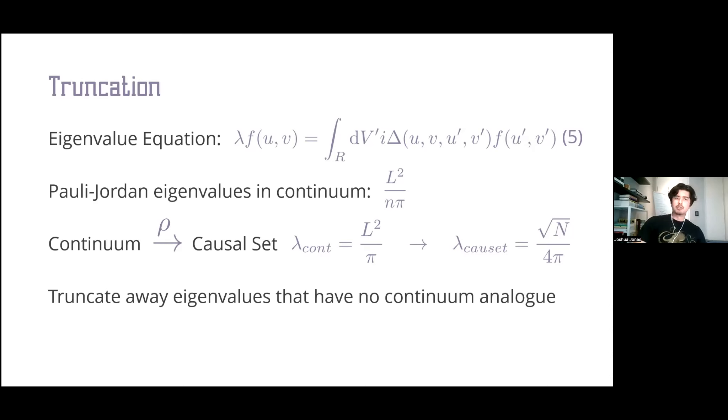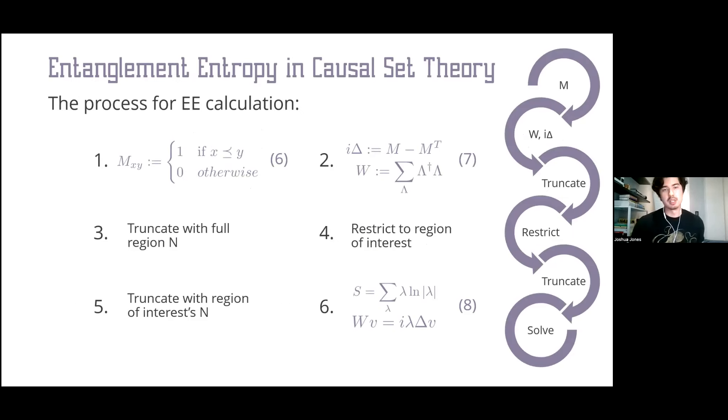Now that the rationale is clear, I'll briefly go over the entire calculation process. First we define a causal matrix, which is the equivalent of an adjacency matrix telling you if two elements are causally related. We construct the Pauli-Jordan function by subtracting its own transpose, then construct the Wightman function out of the positive eigen-spectrum of the Pauli-Jordan matrix. This Wightman function defines a vacuum state, specifically the Sorkin-Johnston vacuum state, which is the de facto vacuum state in causal set theory.